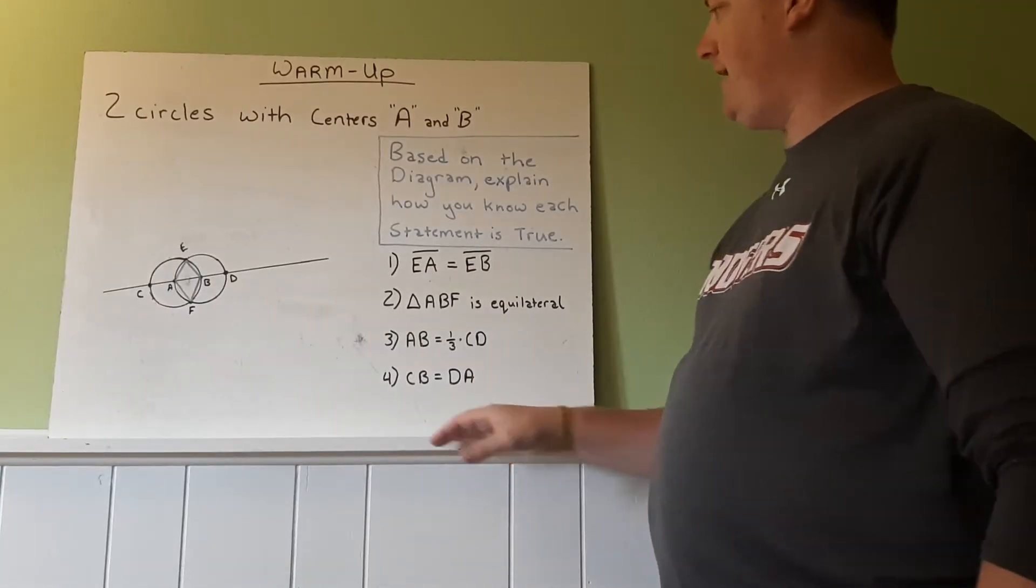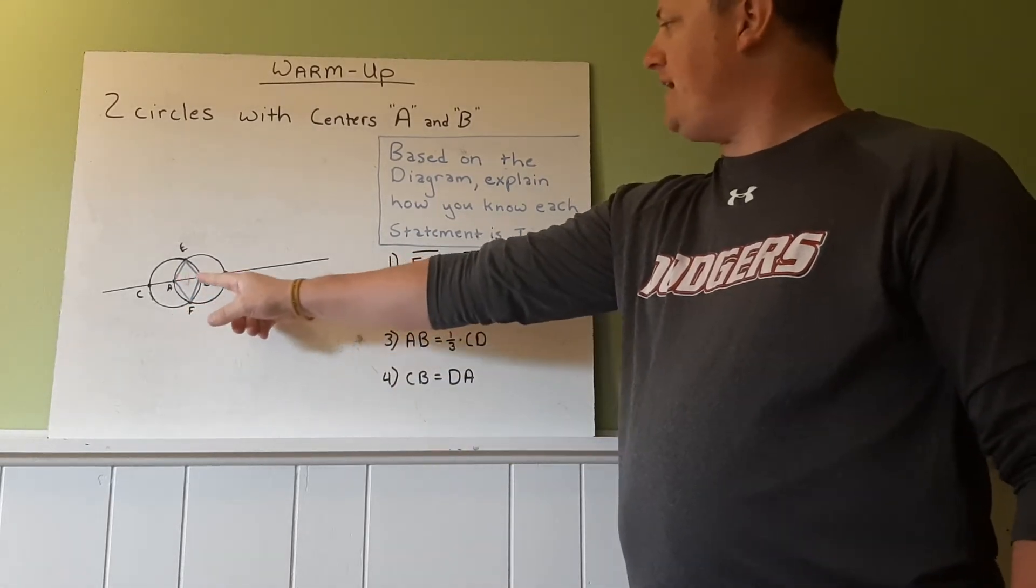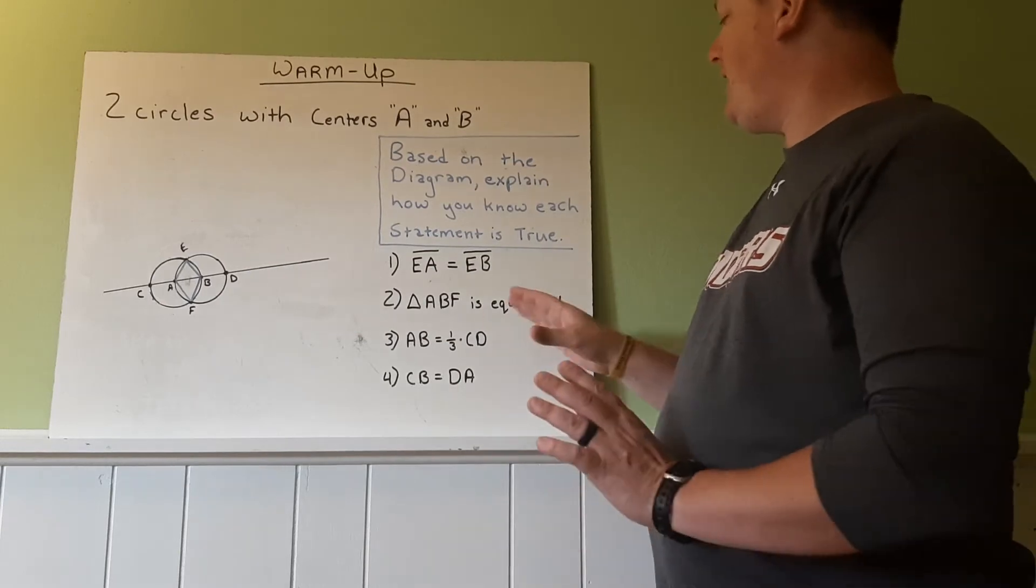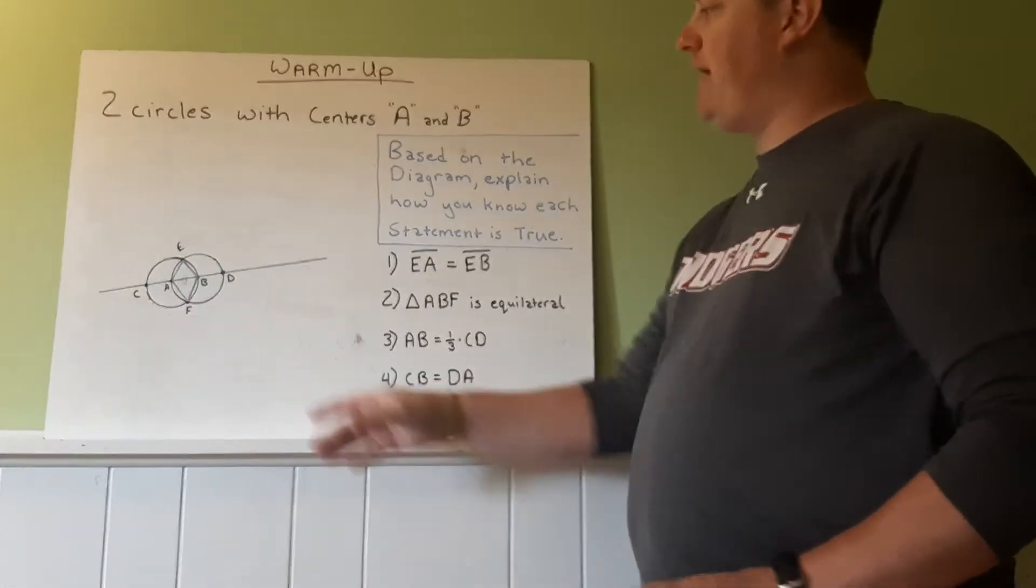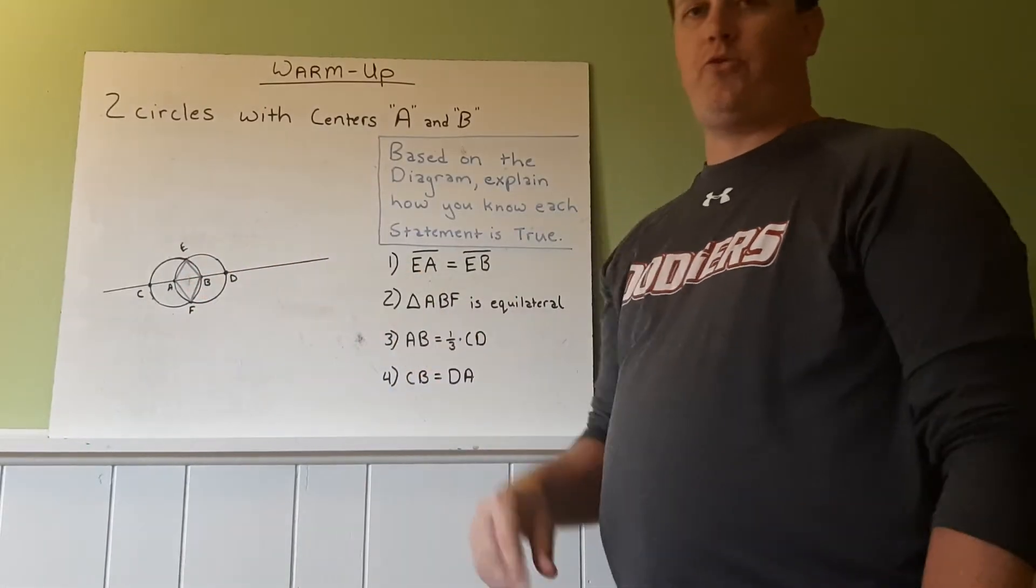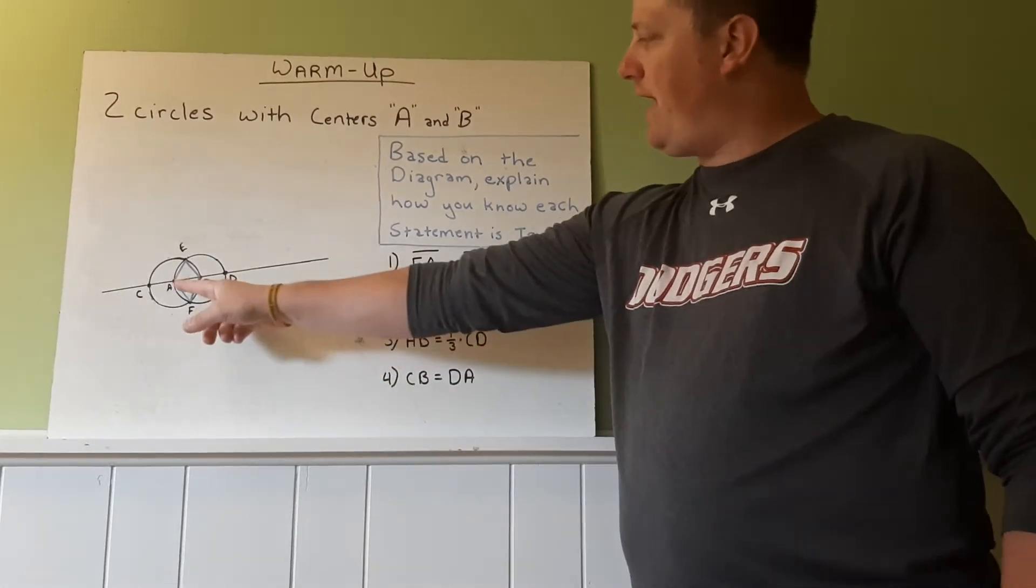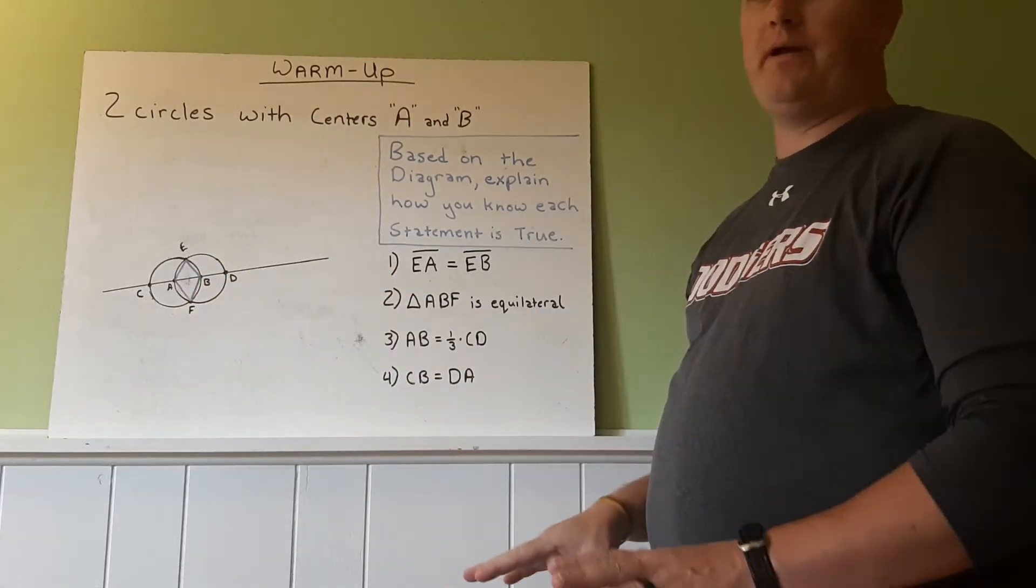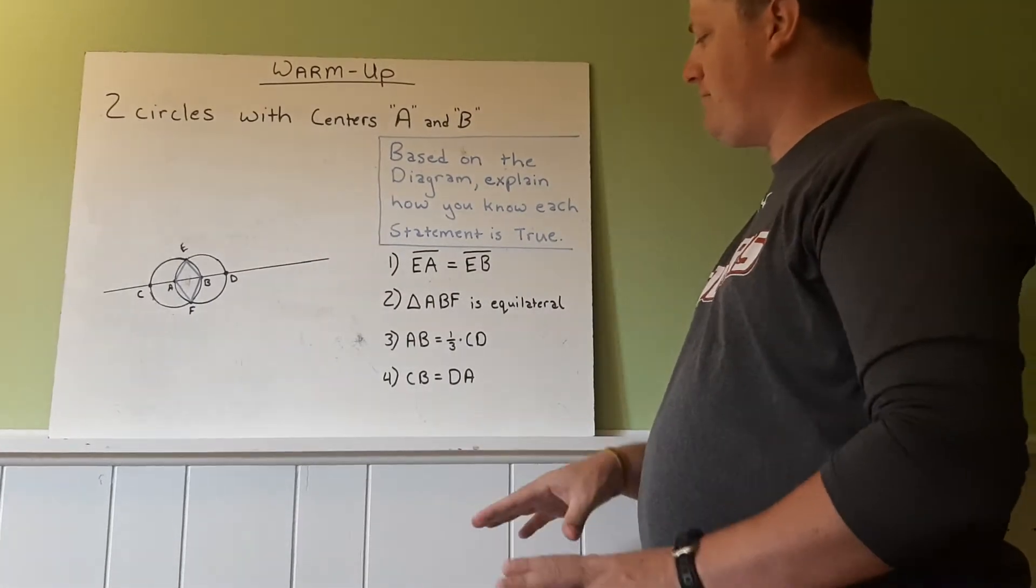The second one we're going to look at here is ABF. If you notice, there's a little triangle at the bottom here. And it is equilateral. Equilateral means that all three sides are the same. So AF, FB, and BA. All three of those sides are the same length.